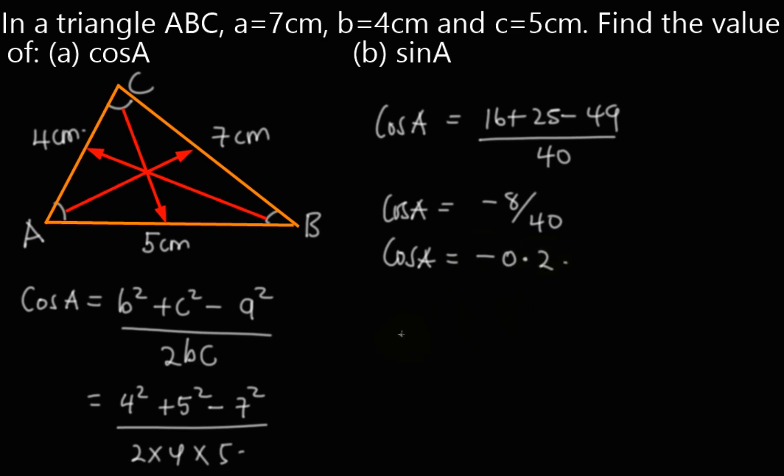Now, to obtain sine of angle A, we are going to use the identity cos²A + sin²A